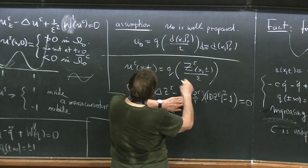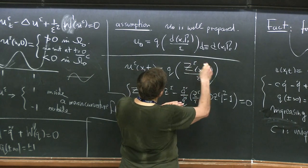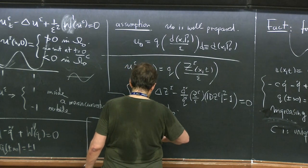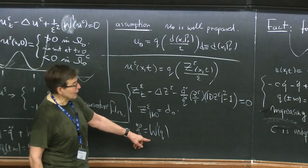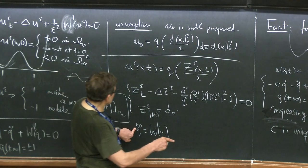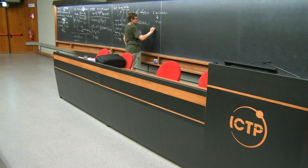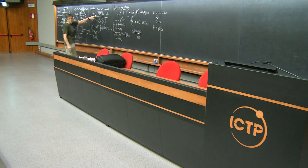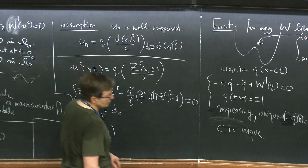I'm going a little bit fast here, just through the computation. Up to here, without dividing by Q prime, you get what comes from the Laplacian and the time derivative. Then I use the fact that Q double prime equals W prime of Q. Remember, when C is zero, Q solves that. So that's the Q I'm using.